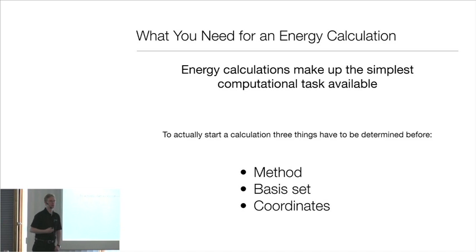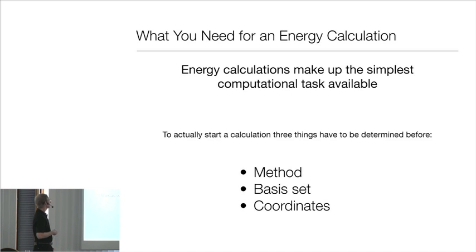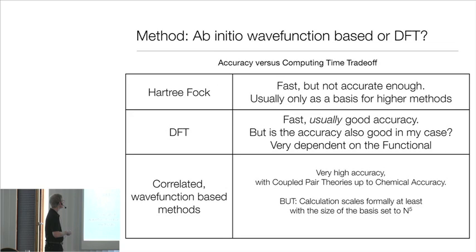Energy calculations make up the simplest computational task. There are three things that have to be determined before: the method, the basis set, and the coordinates. I already said Hartree-Fock theory, fast but not accurate enough, and usually only nowadays is a basis for higher level methods. DFT, fast, usually good accuracy, but is it also accurate in my case? And also very dependent on the functional. Correlated wave function based methods, very high accuracy. Coupled cluster theory, like coupled cluster and so on, up to chemical accuracy, but the calculations get very expensive and time consuming if the system gets larger.